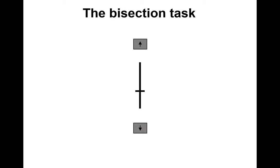The bisection task is a well-known psychophysical task. You observe a cross and have to indicate whether the top segment or the bottom segment is longer, pressing a button to respond. Participants did not receive any feedback. We moved away from monkeys — these are human participants.